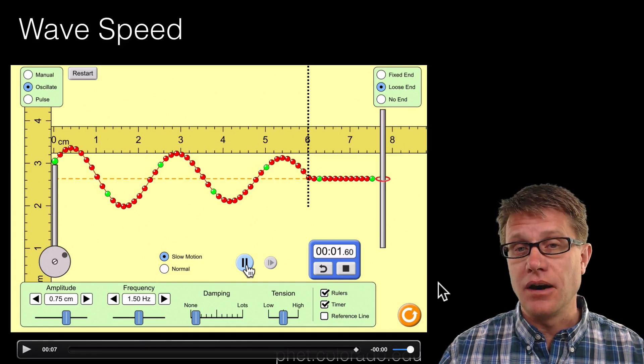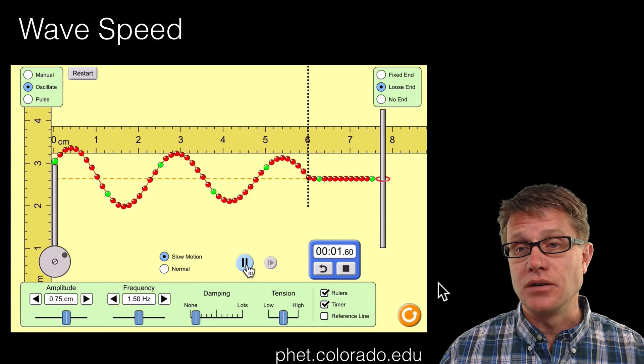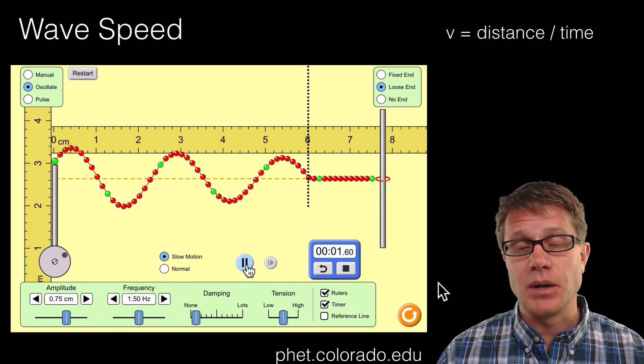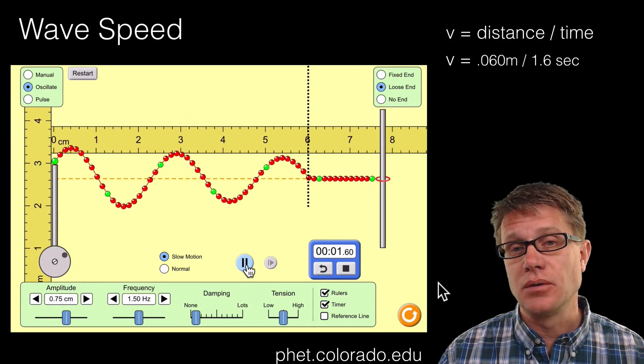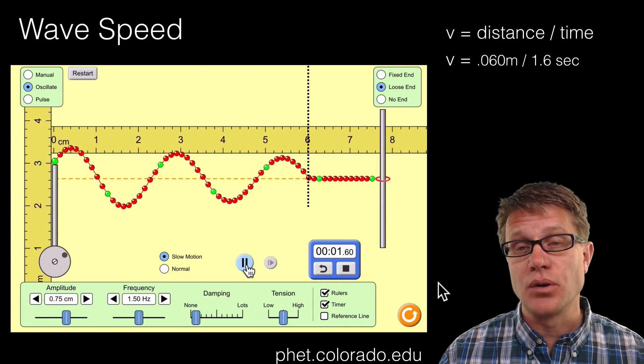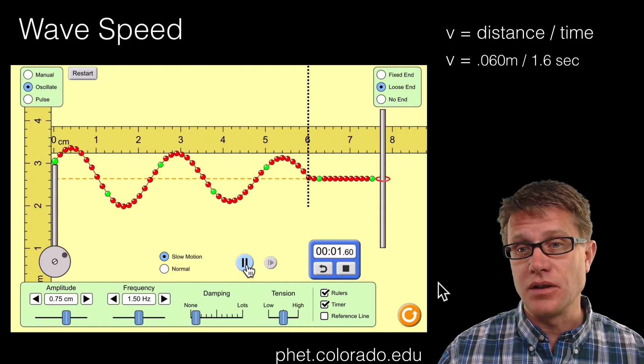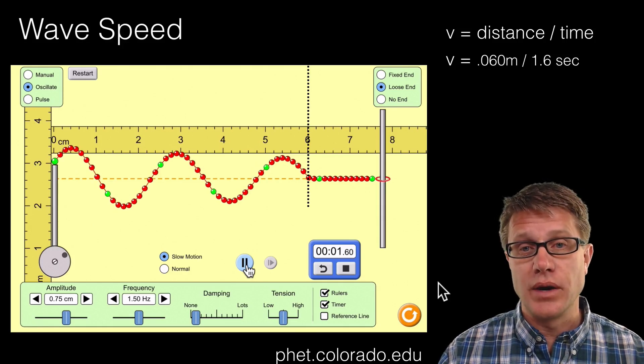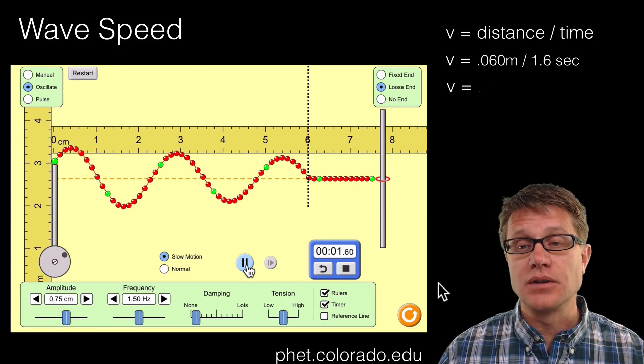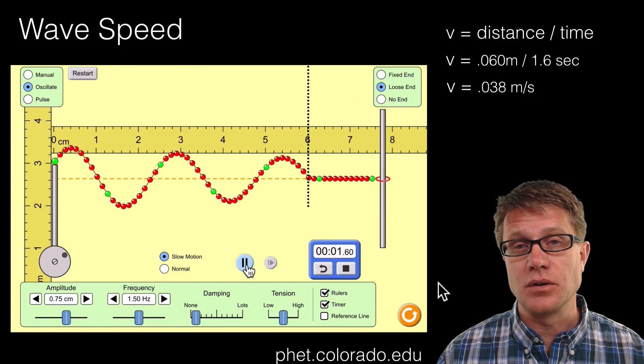And so if I want to figure out its wave speed, one way to do it is simply measure distance divided by time. So what is the distance? In this case we moved 0.060 meters per 1.6 seconds. You can see I converted that to meters. And so what is going to be the wave speed just watching the wave go? It's going to be around 0.038 meters per second.